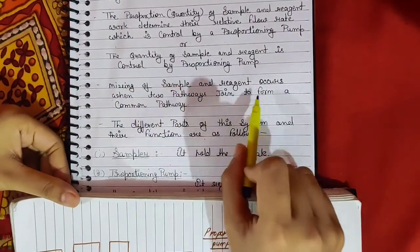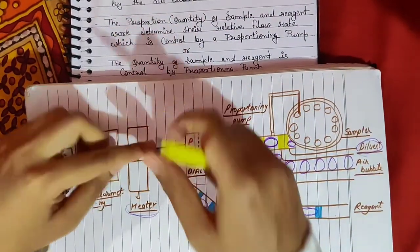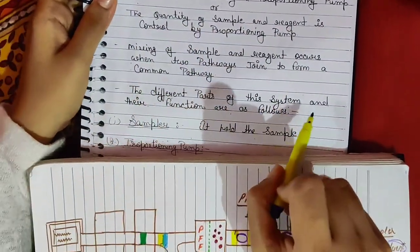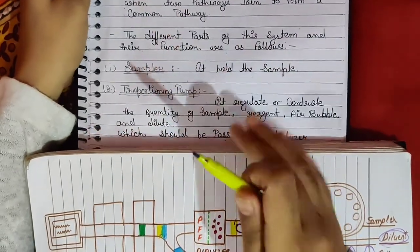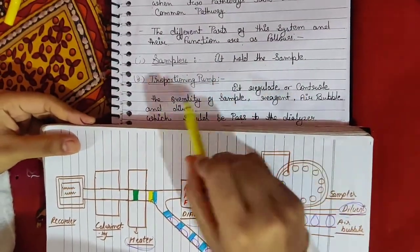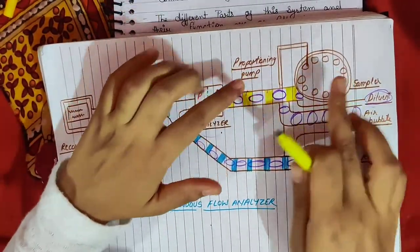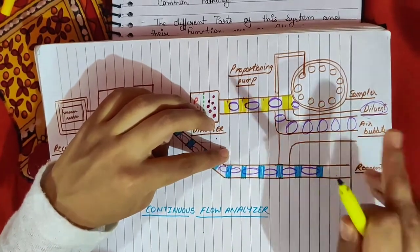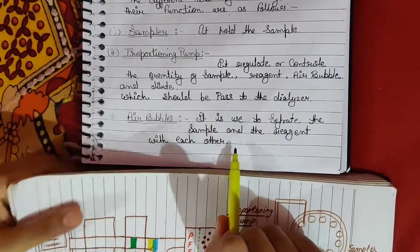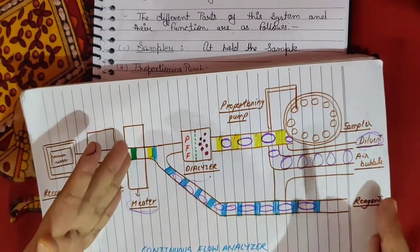Mixing of sample and reagent occurs when two pathways join to form a common pathway. The different parts of the system and their functions are as follows: The sampler holds the samples. The proportioning pump regulates and controls the quantity of sample, reagent, air bubble, and diluent that should pass to the dialyzer. The air bubble is used to separate the samples and reagents from each other.